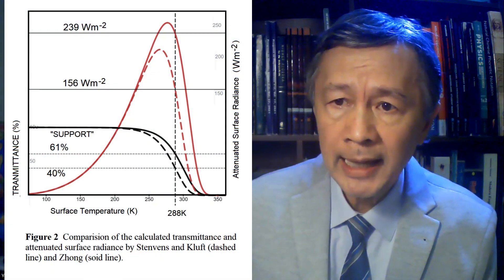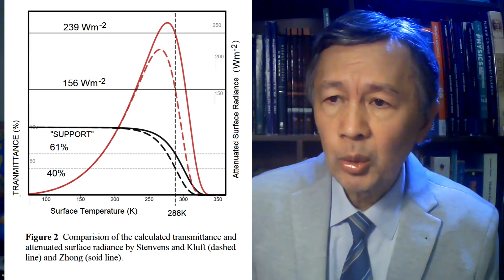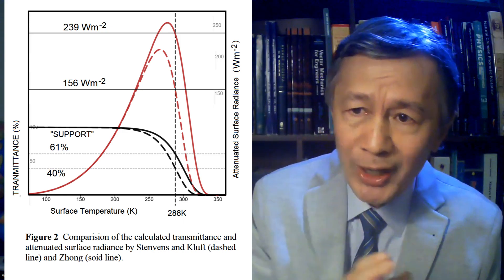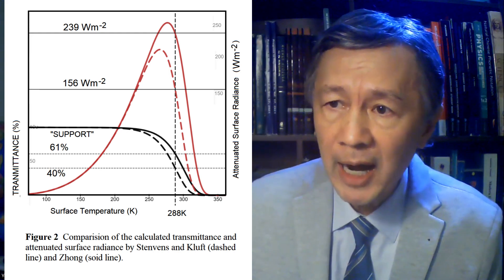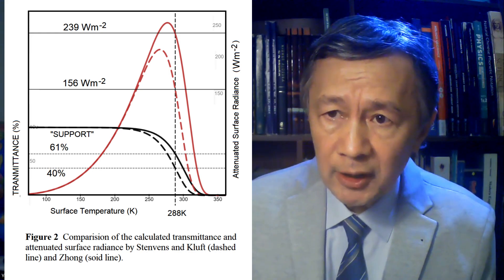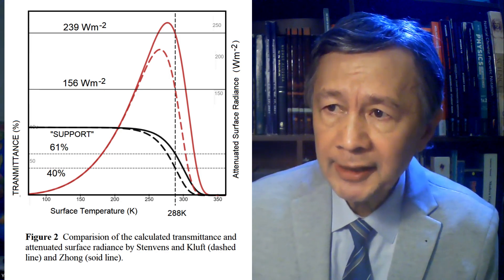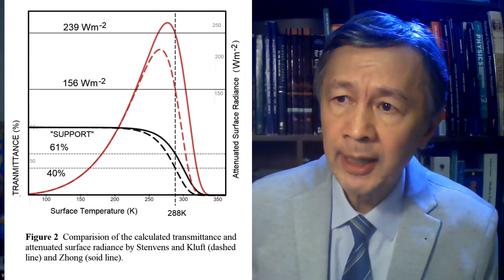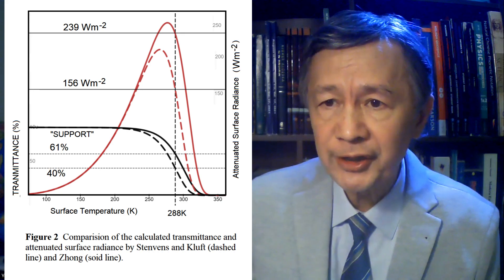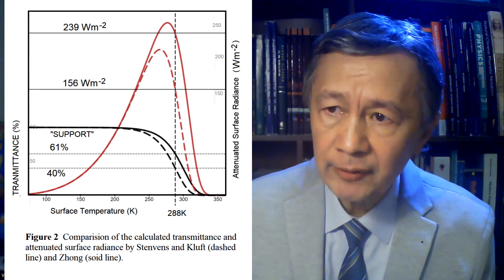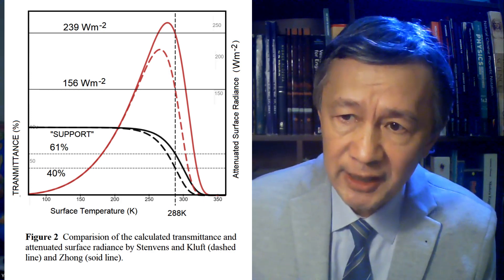By adopting 61 percent instead of 39 percent as the transmittance at surface temperature 288 Kelvin, I derived an analytical formula for the S-factor using the same empirical equations for water vapor and optical depth as Björn used. Graphically, my new result is horizontally translated to the right-hand side by 11.5 Kelvin from Björn's result. This correction is supported by the calculated attenuated surface infrared radiance at the top of the atmosphere, namely 239 W/m². Otherwise, the calculated value for this transmitted surface radiance would be only 156 W/m², as obtained by Björn and his co-author.